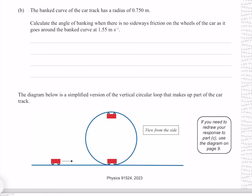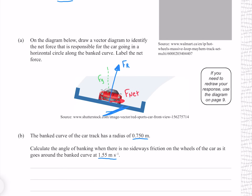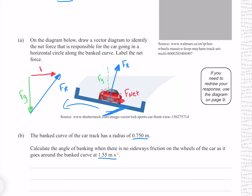The banked curve of the track has a radius of 0.750 m. Calculate the angle of banking when there is no sideways friction on the wheels of the car as it goes around the banked curve at 1.55 m/s. Taking our vectors and pulling them out into a triangle, we have our reaction force at an angle, our downwards force of gravity, and our net force functioning as a centripetal force. We know we have a right angle here, and the angle we're trying to find is this one here.